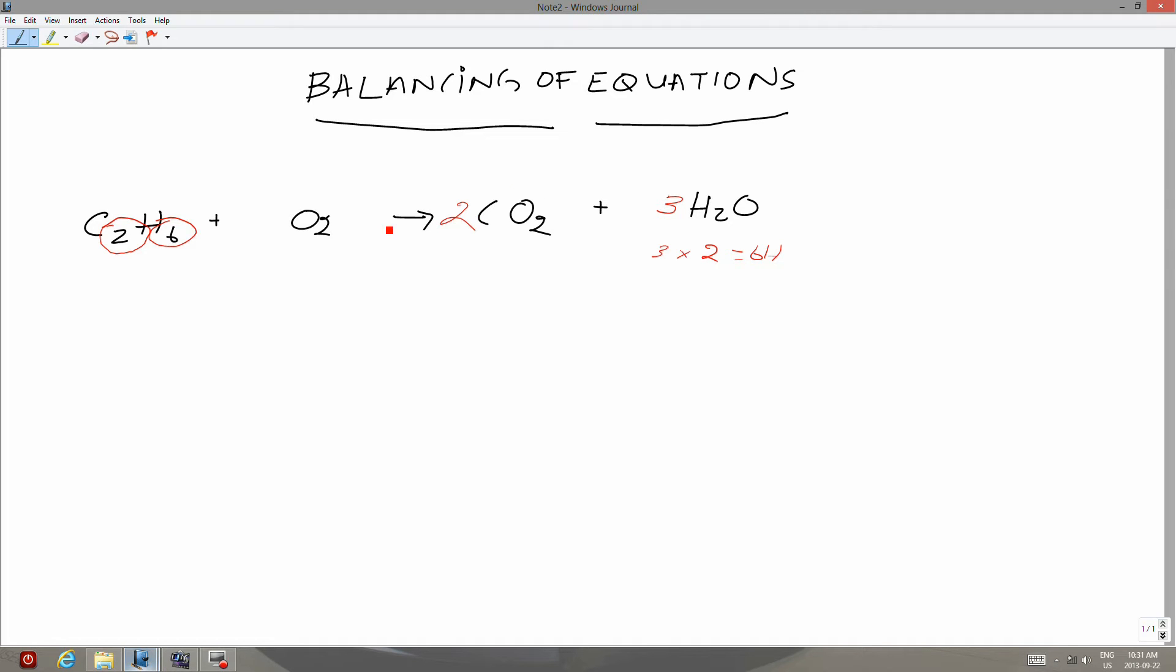So I have balanced the carbon. I have two carbons here, six hydrogens on the right. On the left, I have two carbons here and six hydrogens. The next thing that we have to balance is oxygen.